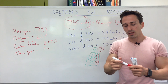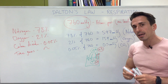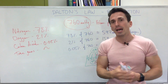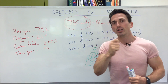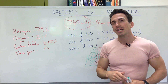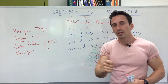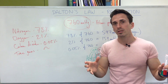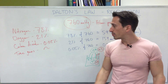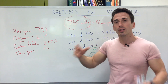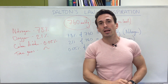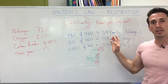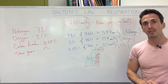So in summary, Dalton's law states that when there's a mixture of inert gases, its total pressure is equivalent to the sum of all the individual pressures. And if you know the percentage of those gases, you can easily calculate what's termed the partial pressure of those individual gases.